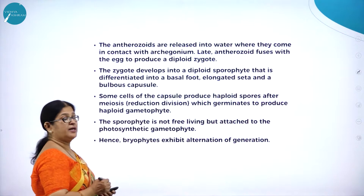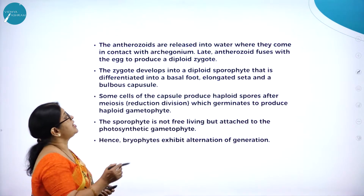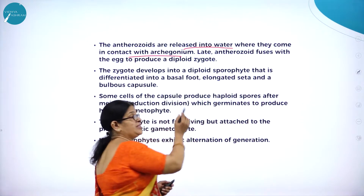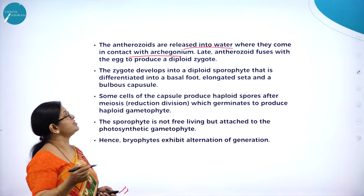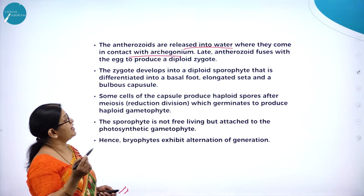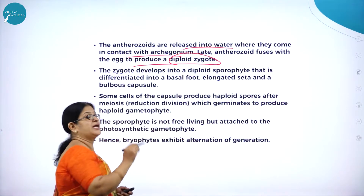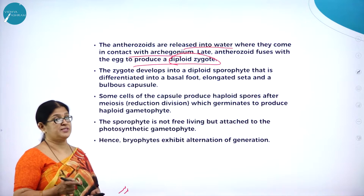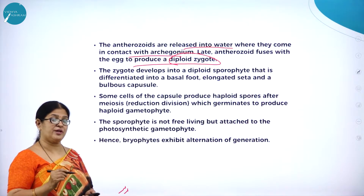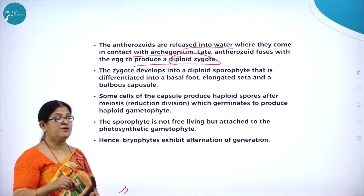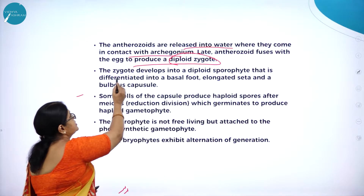Bryophytes need water for sexual reproduction. The biflagellate antherozoids are released into water where they come in contact with the archegonium - just like a frog releasing sperm onto eggs in water. The antherozoid then fuses with the egg to produce a diploid zygote. That is why bryophytes are called the amphibians of the plant kingdom.